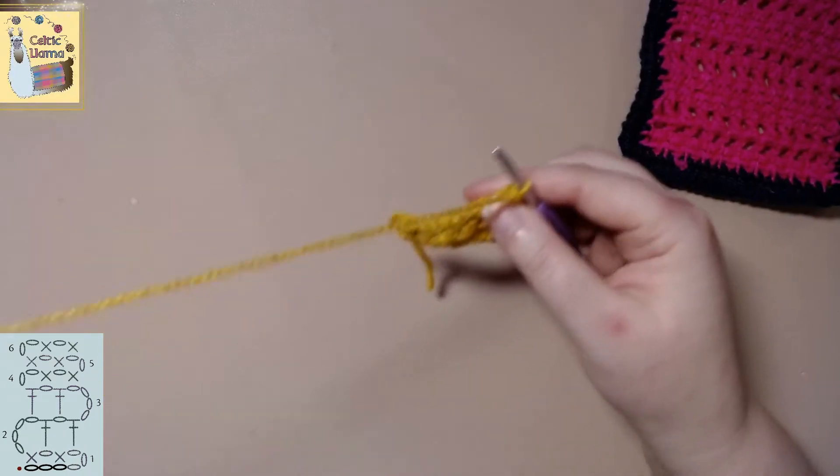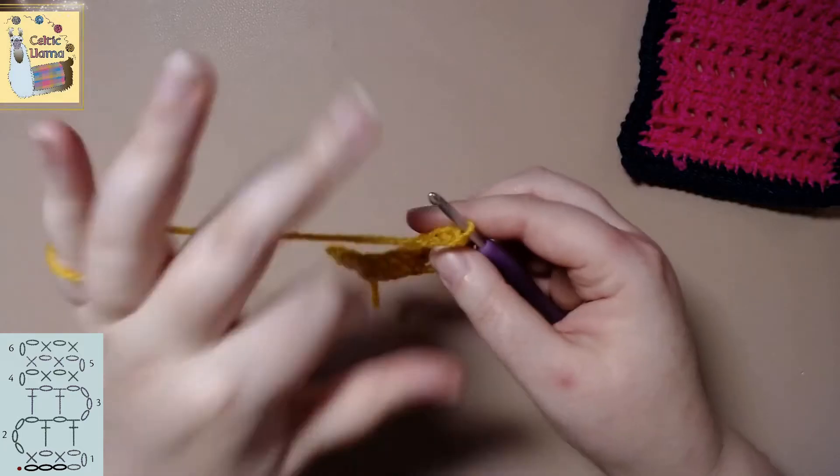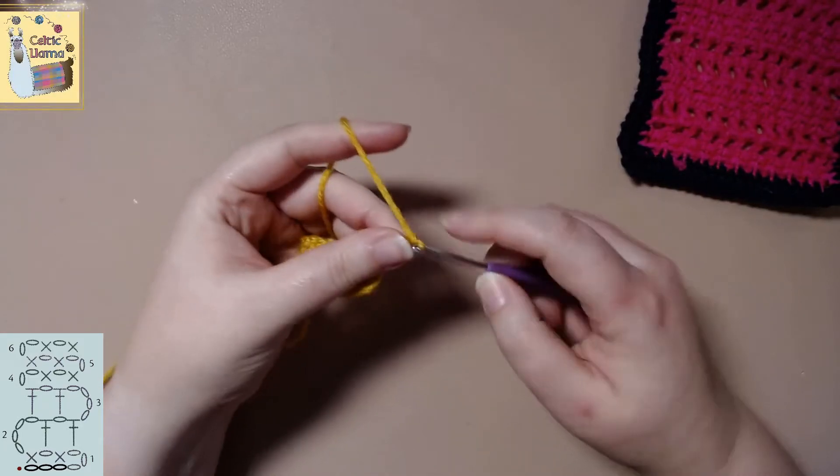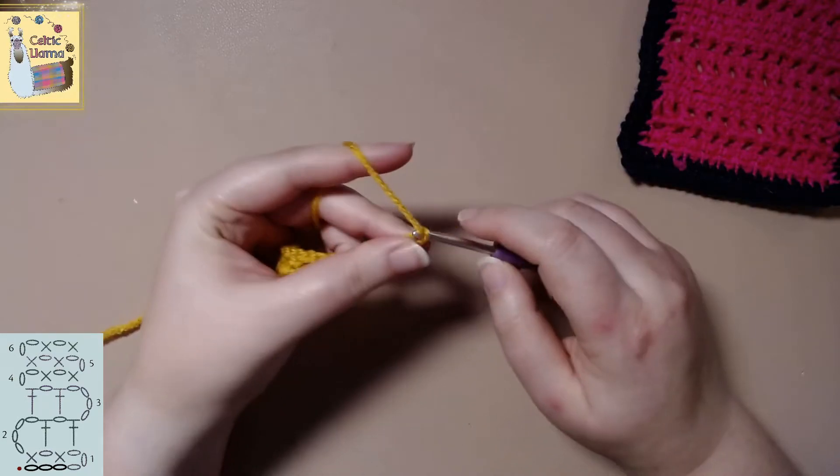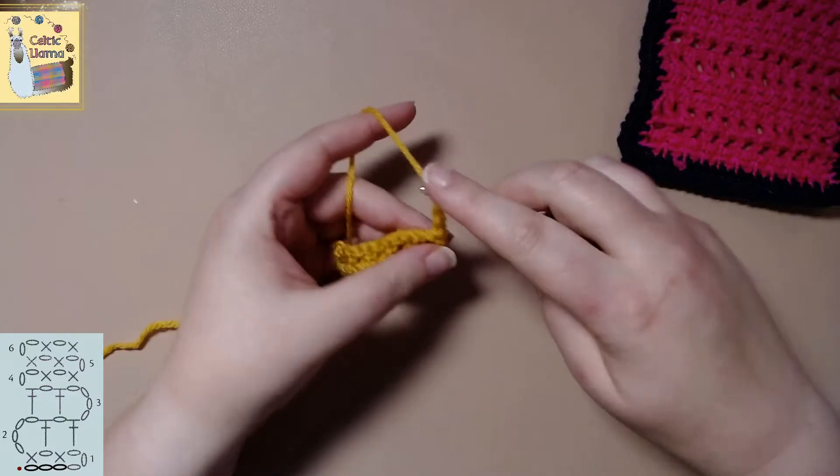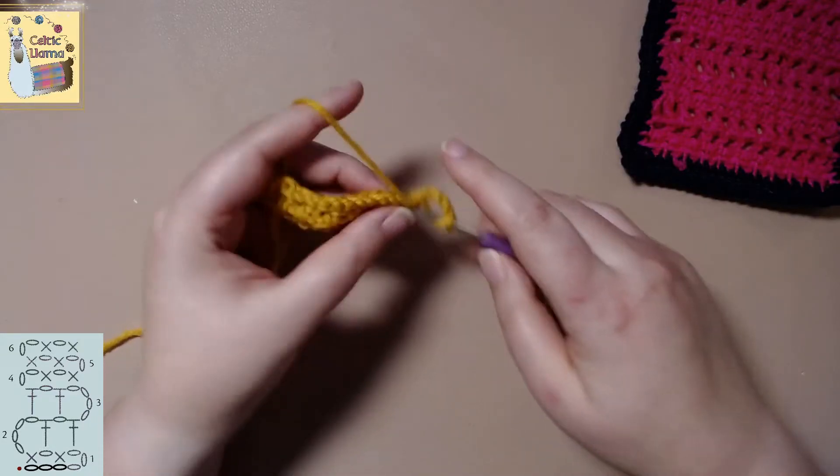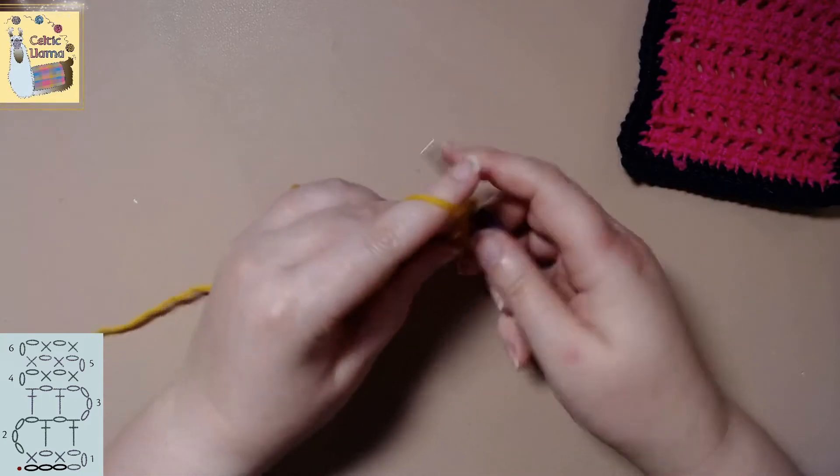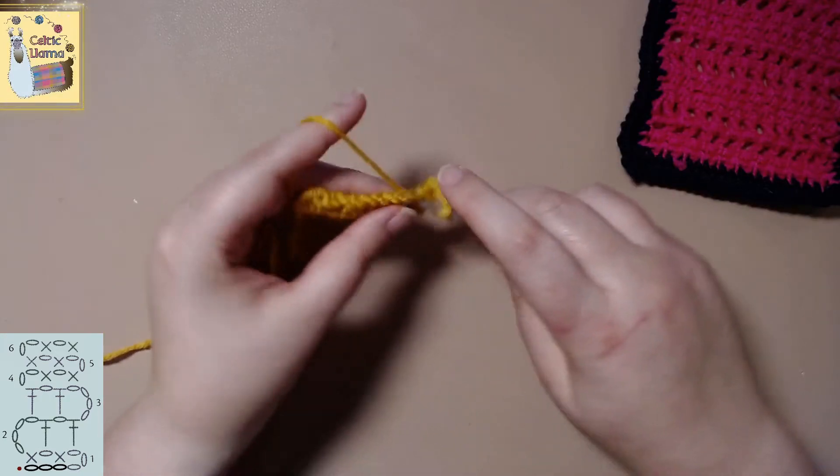So that's row two. So let's go ahead and start row three. We will chain four. And we're going to do exactly like we did in row two. We are going to double crochet in the chain one space.